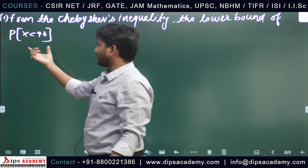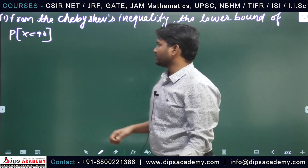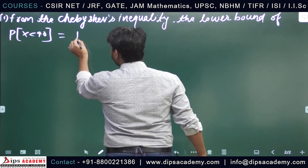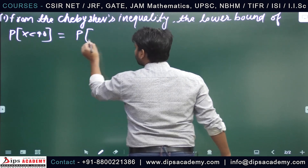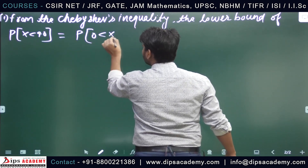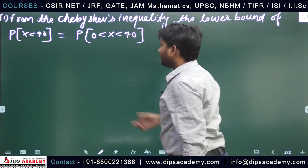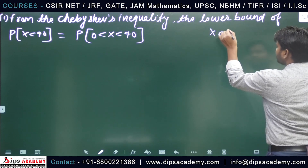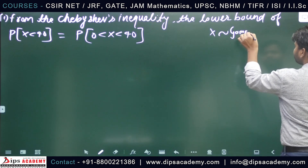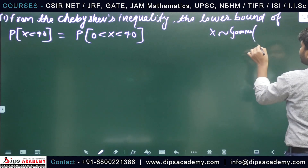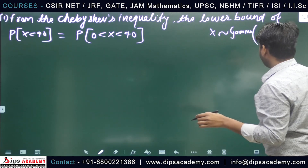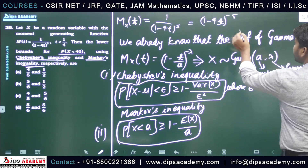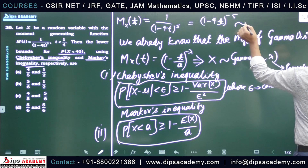We have to find the lower bound for the probability that x is less than 40. We can write this as P(0 < x < 40). Since we know that x follows a Gamma distribution, the support of x is 0 to infinity.